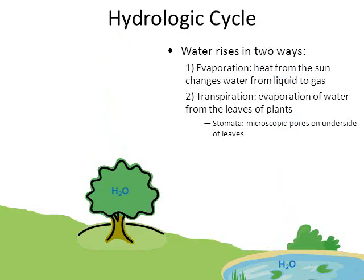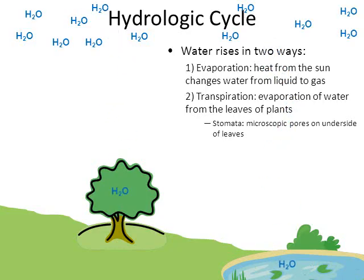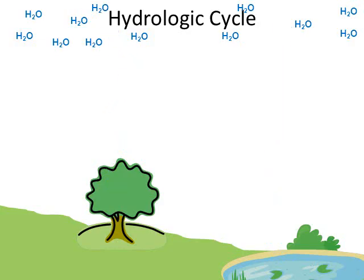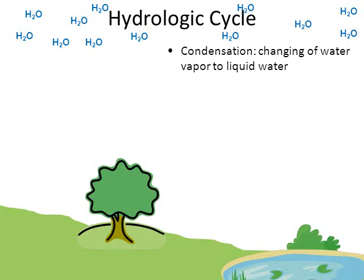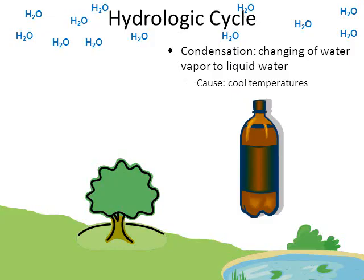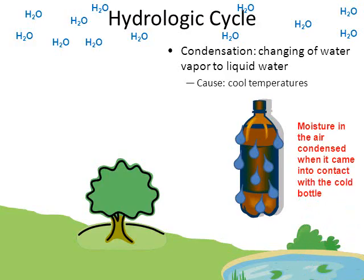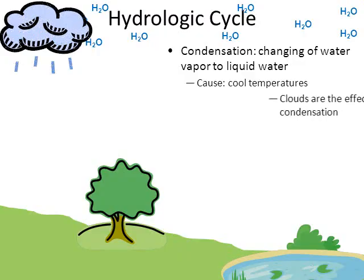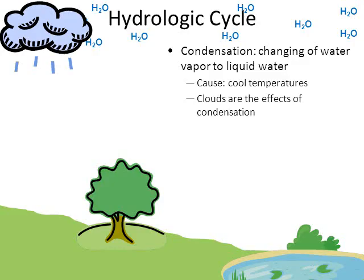Water is rising through evaporation and transpiration. Water collects in the atmosphere and eventually it's going to condense and form clouds. Condensation occurs because as water rises into the air, it eventually encounters cooler temperatures. For example, if you take a soda out of the refrigerator and leave it outside for five minutes, little water droplets form all over the bottle — moisture in the air came in contact with the cold bottle and condensed.